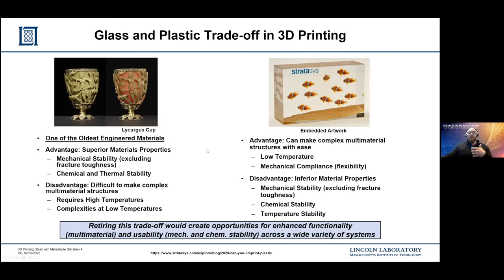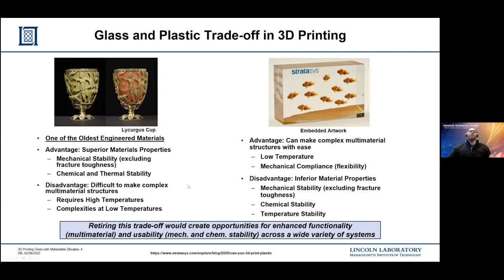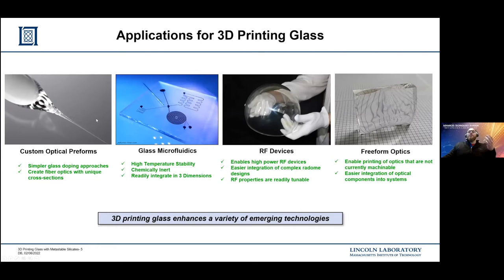What we hope to do at Lincoln Lab is to develop novel materials, such as glass or ceramic materials, that can overcome those traditional inferior material properties that plastics have. Glass is one of the oldest types of engineered materials. It has novel thermal and mechanical properties and chemical stability, which I'll focus on in today's talk. The reason we can't 3D print glass the way we can 3D print plastics is because of its advantageous properties requiring high temperatures for conventional manufacturing and advanced machining to process parts. If we could 3D print glass like plastics, we would potentially see advancements in several device areas.